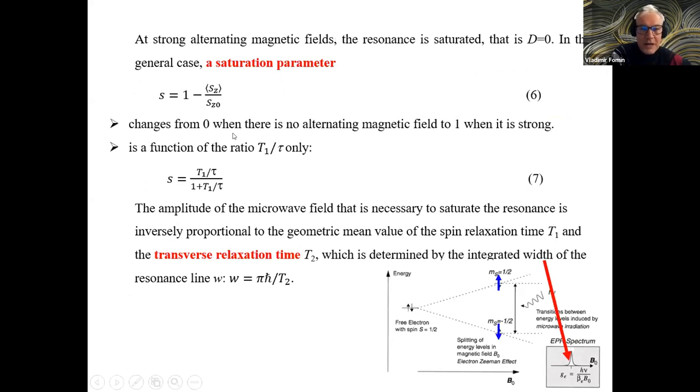A strong alternating magnetic field saturates the resonance, the magnetization is zero. In general case, we can introduce a saturation parameter, which will be important in what follows, which is related to the spin magnetization at the given alternating magnetic field to that with no alternating magnetic field. This saturation parameter is remarkably a function of the ratio of the spin relaxation time and thermal relaxation time only. The amplitude of the microwave field is inversely proportional to the mean value of spin relaxation time and transverse relaxation time, and it can be controlled very well.